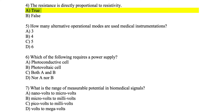Number 5: how many alternative operational modes are used in medical instrumentation? If you go back to the content from class, you will see that we have five operational modes — including direct, indirect, continuous, and discrete. You can go back to the lecture and check those five alternative modes. The answer is C.